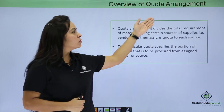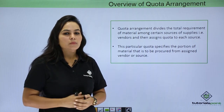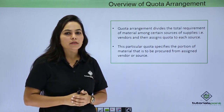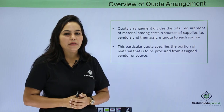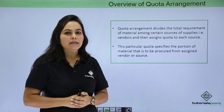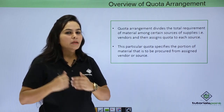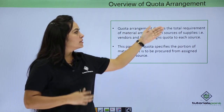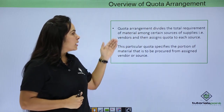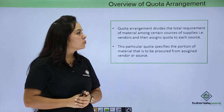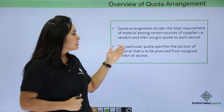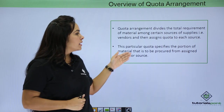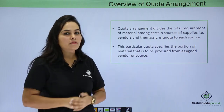Let's start with the overview of quota arrangement. Suppose a particular material needs to be procured from different vendors according to organization requirements. In this case we will be maintaining a record for material and multiple vendors in quota arrangement. Quota arrangement divides the total requirement of material among different vendors and assigns a quota to each source. This quota specifies the portion of material that is to be procured from a particular vendor.